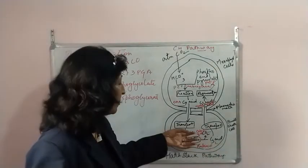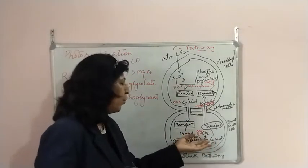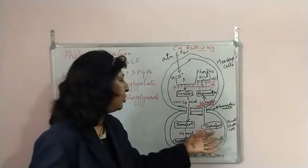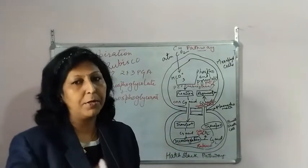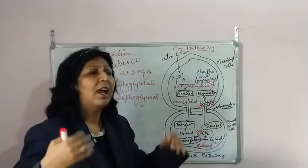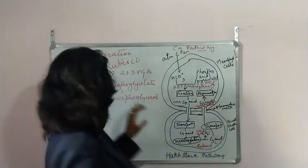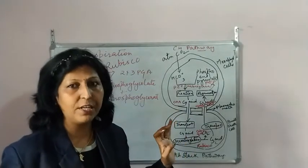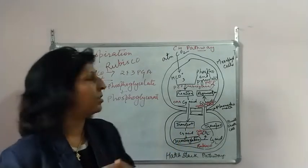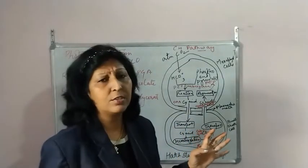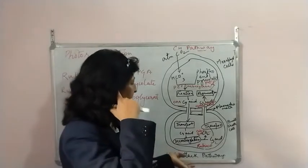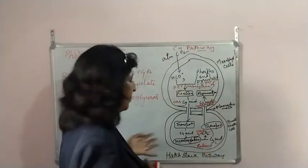In the C4 pathway, this problem does not occur because CO2 is released in the bundle sheet cells, so CO2 concentration there is higher. RuBisCO has enough CO2 to combine with and will not compete with O2. In the mesophyll cells, both O2 and CO2 are present and by chance RuBisCO may combine with O2, decreasing photosynthesis productivity. This is photorespiration, and it is considered a wasteful process.